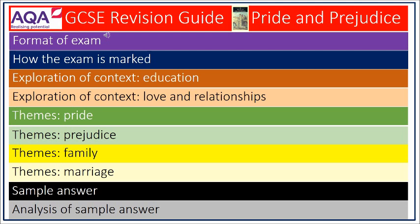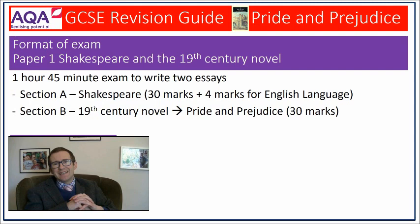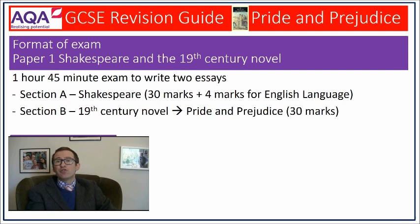Pride and Prejudice is examined within the paper entitled Paper 1: Shakespeare and the 19th century novel. You have one hour and 45 minutes to write two essays, which are essentially equally weighted, excluding the additional four marks for the accuracy of your writing given to your Shakespeare essay. There is no choice of questions. You will be given an extract from the novel and expected to write in detail about it in relation to a particular question. However, you will also need to extend your response to relate your ideas about the extract to the novel as a whole. You will therefore need to have memorised some quotations on different themes and characters before walking into that examination hall.